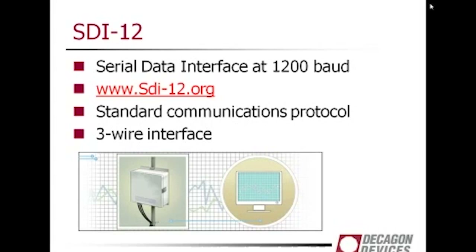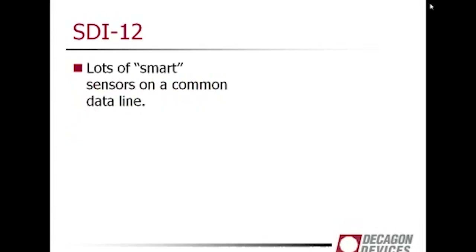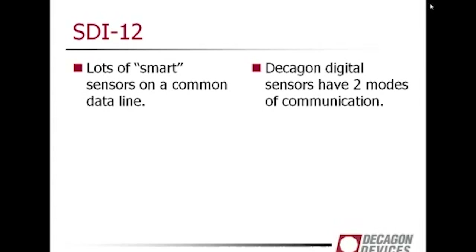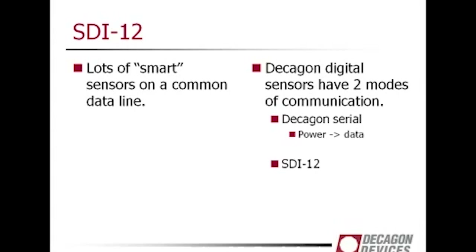It's a three-wire interface, and the basic idea is that you can put lots of smart sensors on a common data line. Decagon digital sensors have two modes of communication. You provide the sensor with power, and then it spits out a serial string of data. After it's given you its data, it enters SDI-12 mode.